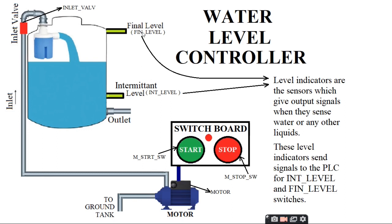There are two level indicators: an intermittent level and a final level. Once the motor is turned on, water flows from the ground tank to the upper tank and starts filling. These level indicators are sensors which give output signals when they sense water. They send signals to the PLC for the INT_level and FIN_level switches.